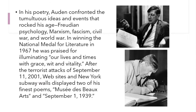In his poetry, Auden confronted the tumultuous ideas and events that rocked his age: Freudian psychology, Marxism, fascism, civil war, and world war. In winning the National Medal for Literature in 1967, he was praised for illuminating our lives and times with grace, wit, and vitality. After the terrorist attacks of September 11, 2001, websites and New York subway walls displayed two of his finest poems: 'Musée des Beaux Arts' and 'September 1, 1939.'